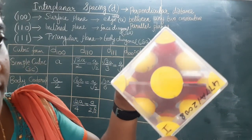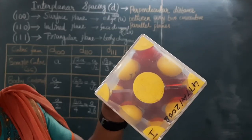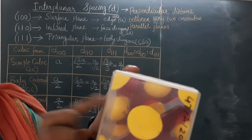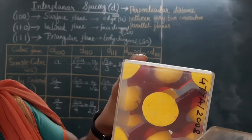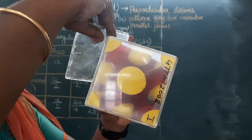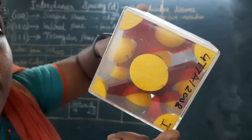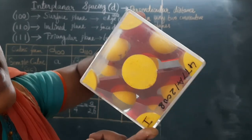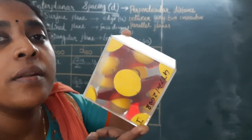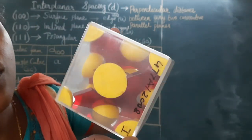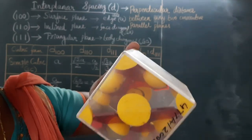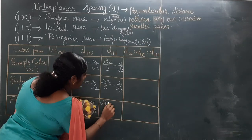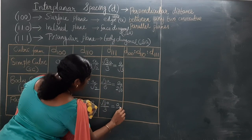The last structure to consider is the 111 triangular family of FCC. How many planes can you see here? 1, 2 visible here, plus 1, 1 more, and 1 at the top corner — so 4 triangular planes are possible in the FCC. Then we consider 3 perpendicular distances along the body diagonal. So D(111) for FCC = body diagonal root 3 · A divided by 3, which equals A by root 3.